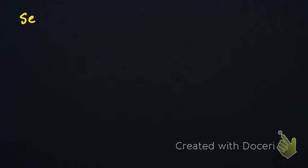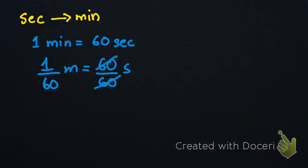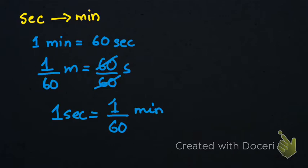Similarly, when we have to convert from seconds to minutes, we are going to do division. One minute equals 60 seconds, so dividing both sides by 60 we get one upon 60 minutes equals one second. This tells us that when converting from seconds to minutes we will divide by 60.